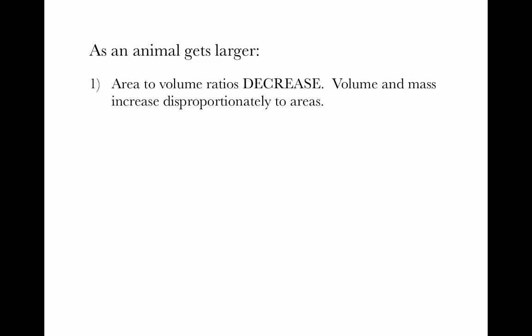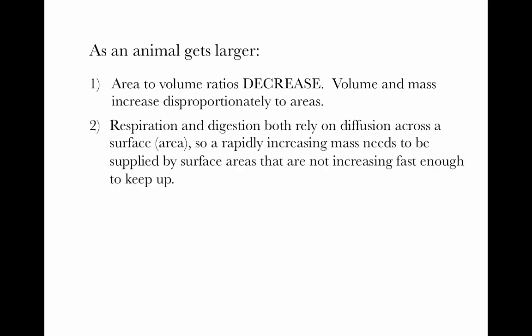The important physiological consequences are that as we'll see with the respiratory and digestive systems, both of these functions rely on diffusion across a surface, depending on the total area available for diffusion. Rapidly increasing mass needs to be supplied with oxygen and nutrients by surface area. But if scaling isometrically, surface areas are not increasing fast enough to keep up with the disproportionately increasing volume. That's one big problem as body size gets larger.